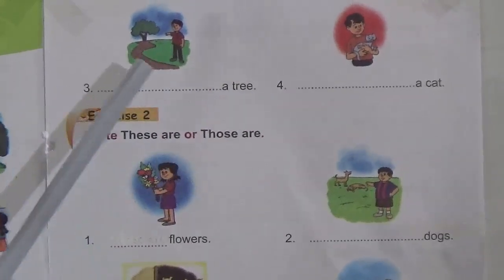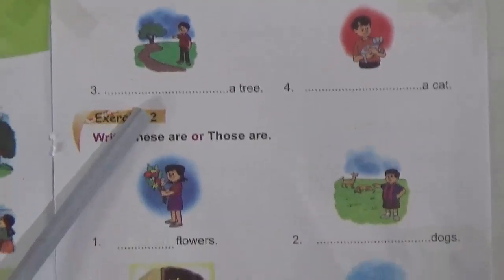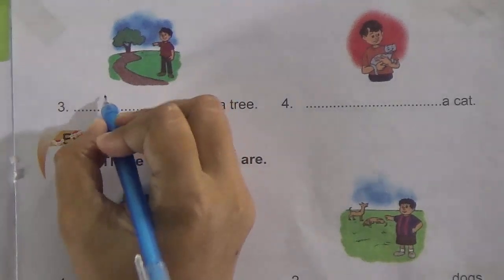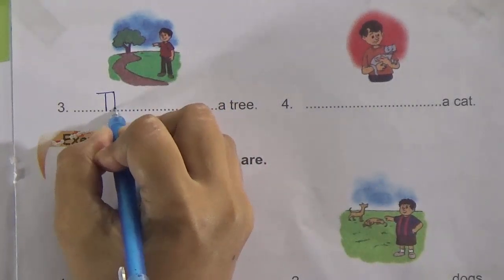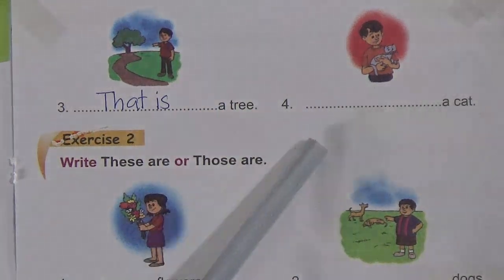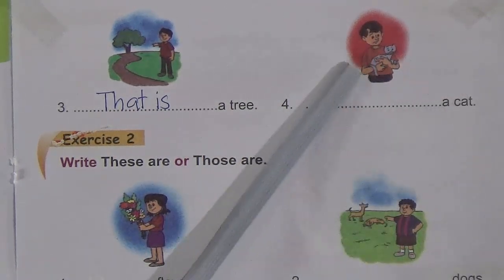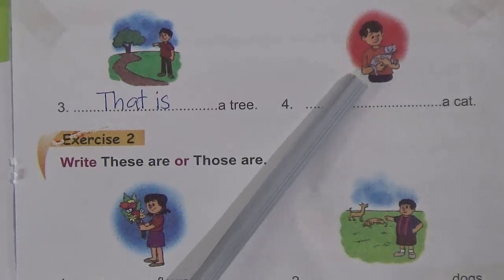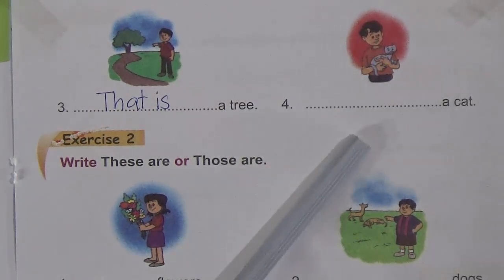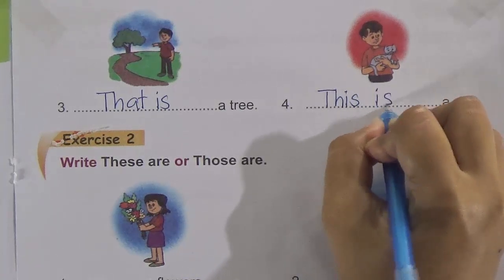Now the next one: blank — a tree. Look at this picture — the tree is far away from the boy, so we will write 'that is'. And now the next picture: blank — a cat. The cat is near the boy. So what do you use when something is near us? We use 'this is'. So we will write 'this is'.